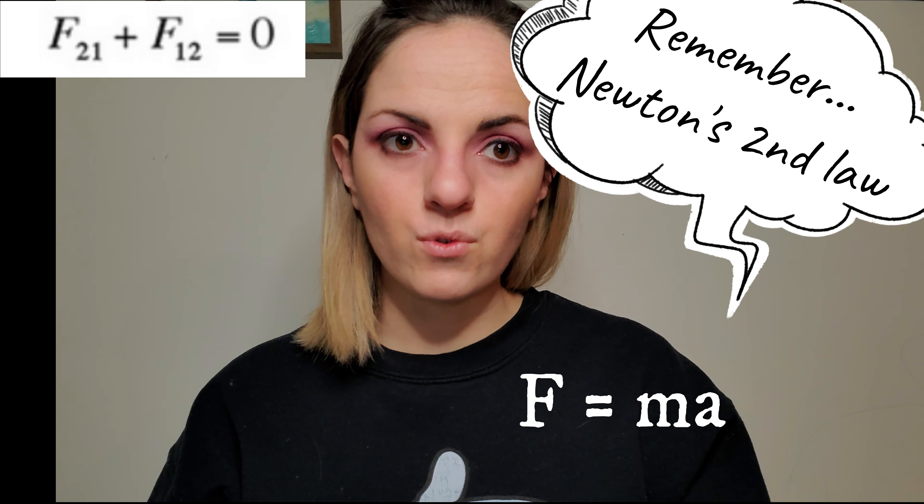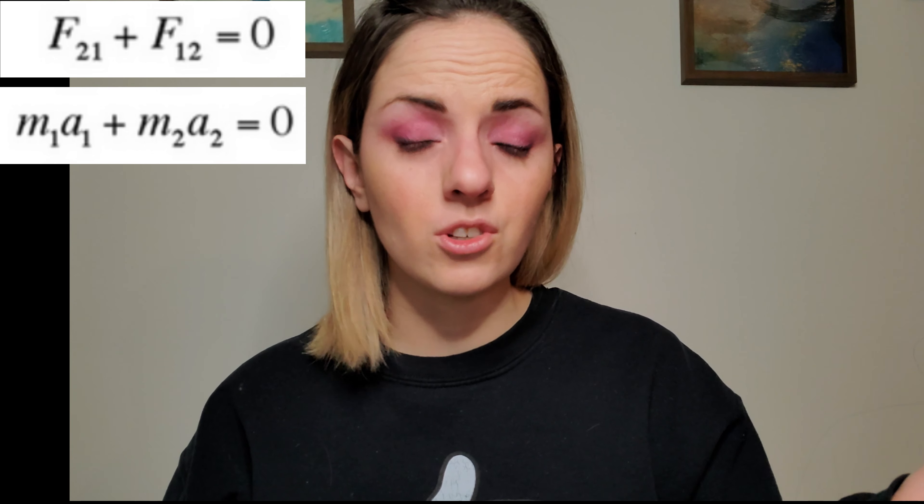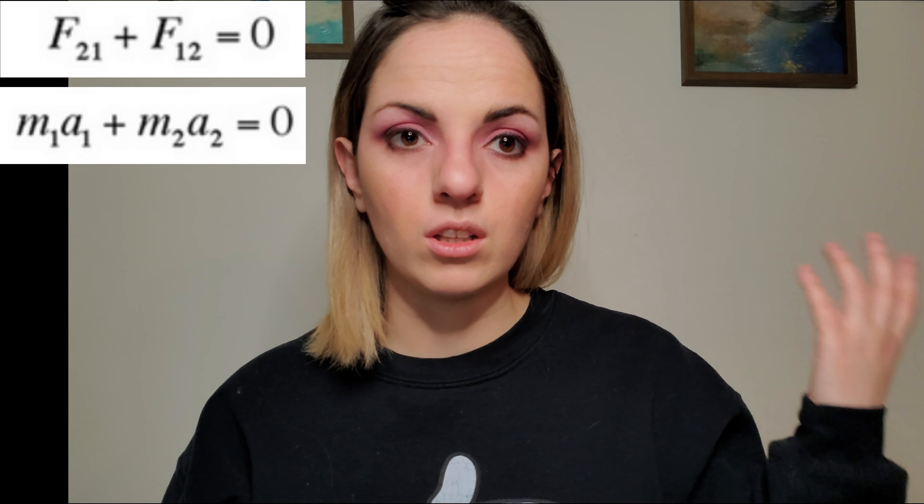Going back to Newton's basic laws: every force has a reaction of the same magnitude and opposite direction — that's Newton's third law. In this case, the force going from mass 2 to mass 1 and the force going from mass 1 to mass 2 give us F₂₁ + F₁₂ = 0. Using Newton's second law, force equals mass times acceleration, we can rewrite this as m₁a₁ + m₂a₂ = 0.